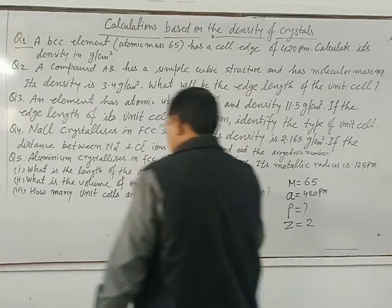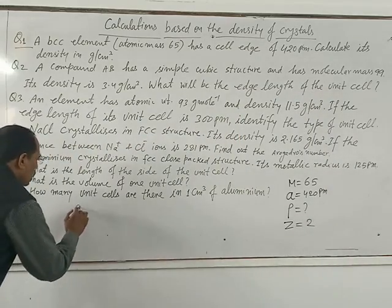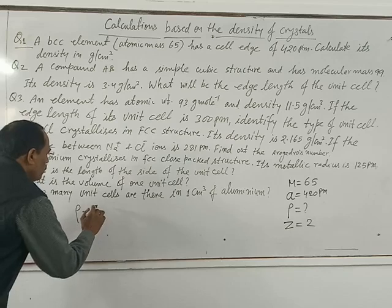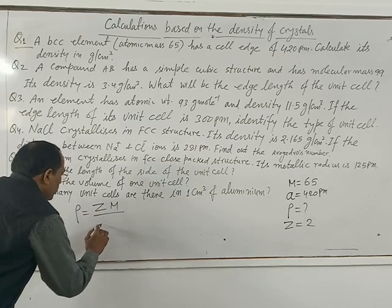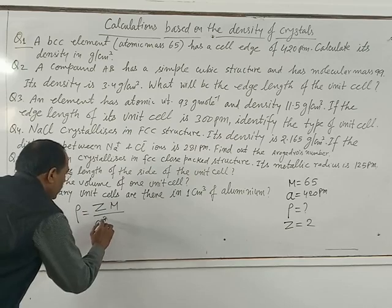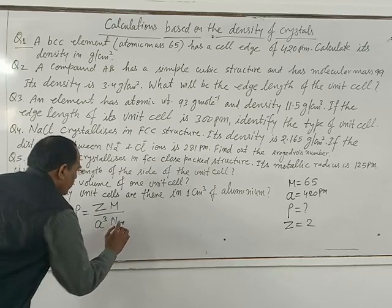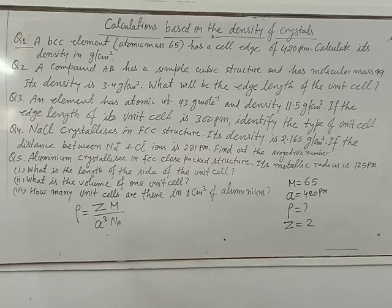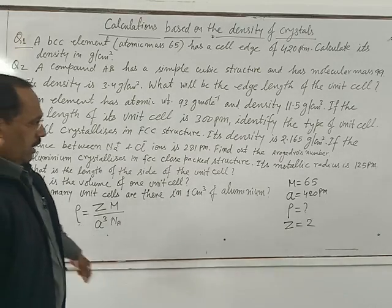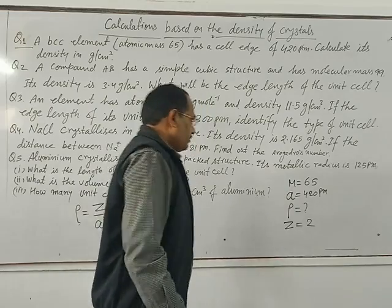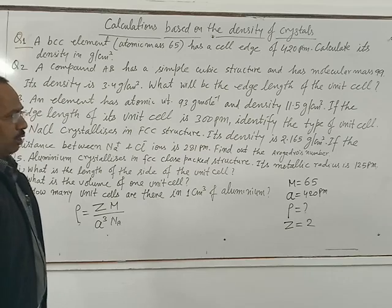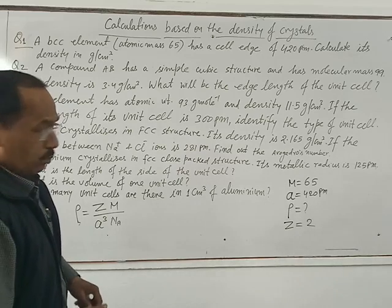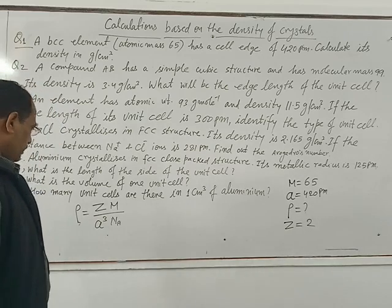The required formula is: rho equals Z times M divided by A cubed times N (Avogadro's number). Substituting: M equals 65, Z equals 2, and A equals 420 picometers.